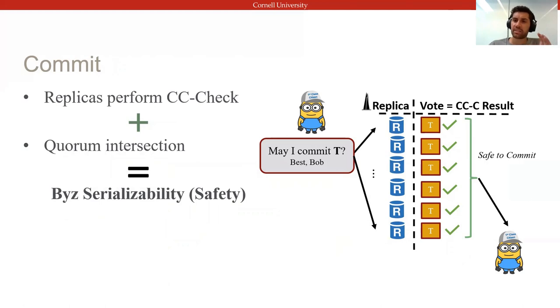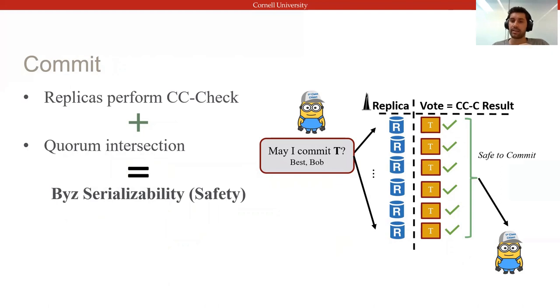To maintain Byzantine serializability, clients collect the replica votes from a shard, and if sufficiently many deem the transaction locally serializable, it concludes that it is safe to commit on that shard.